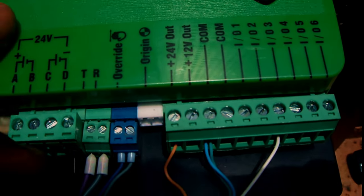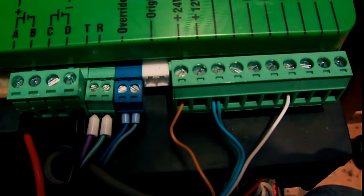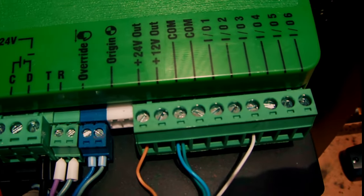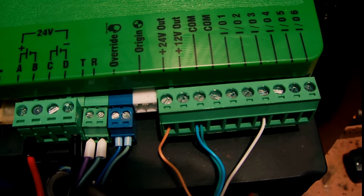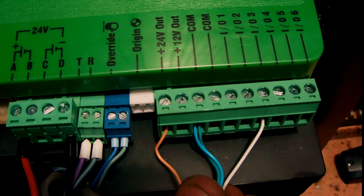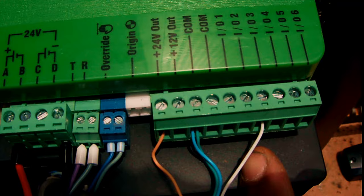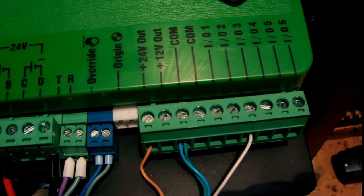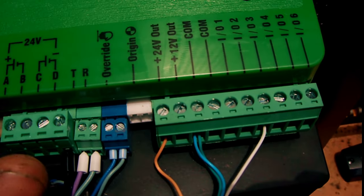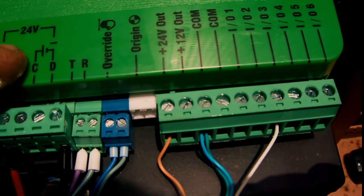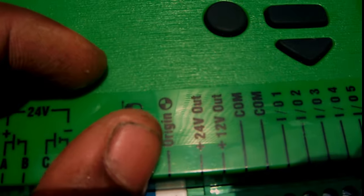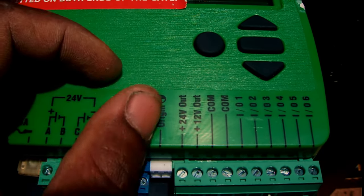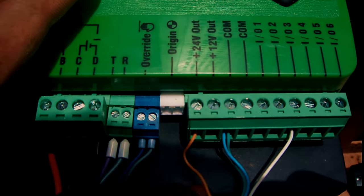Remember we have orange for positive, blue for negative, green for common, and white for the normally close because you are doing closing safety. On the D5 Smart board, you have to connect your positive wire to the 24 volt out, which is here. You can see the orange wire going to the 24 volt out.